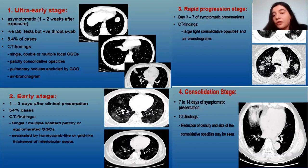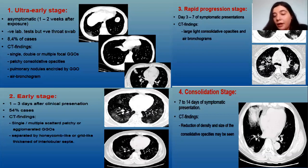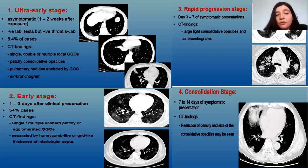In the consolidation stage, seven to fourteen days of symptomatic presentation, there is a reduction in density and size of the consolidative opacities. In the dissipation stage, two to three weeks after onset of symptoms, the range of lesion is sparsely reduced. We have patchy consolidation or strip-like opacities and grid-like thickening of the interlobular septa.